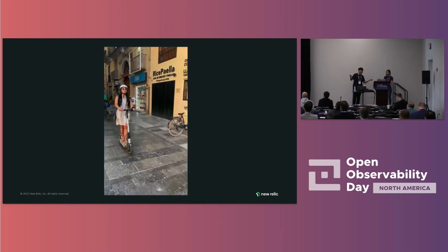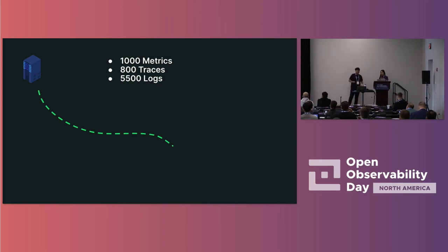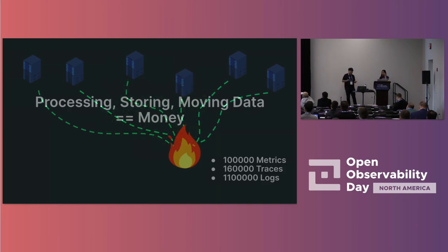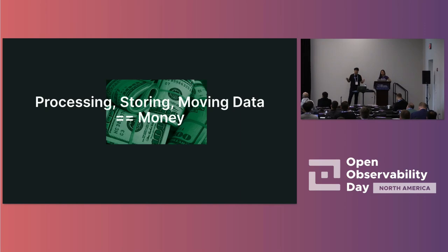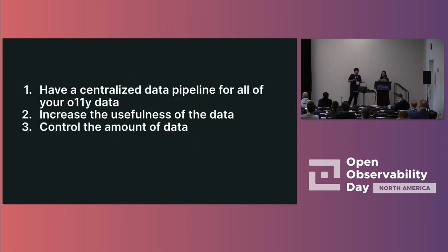When you're starting to develop your applications you're probably not worried about the amount of observability data you're generating. You start with a couple thousand metrics, a couple hundred traces, a couple thousand logs — it's not a huge deal. But as your application scales it becomes a large problem, because doing anything with data costs a lot of money, whether you're processing it, storing it, or moving it. Here are a couple things we at New Relic think you can do to increase the ROI of your observability setup.